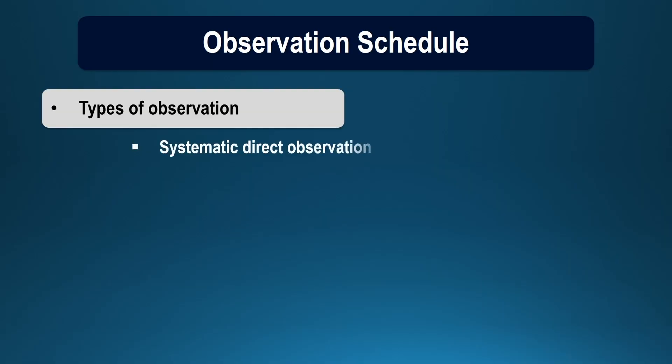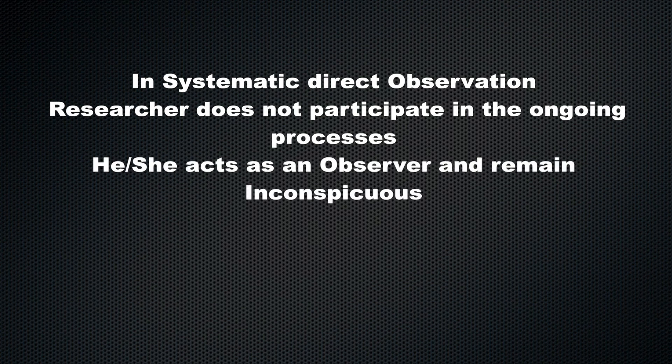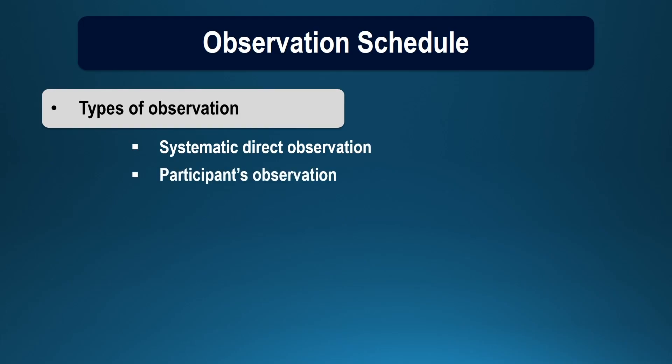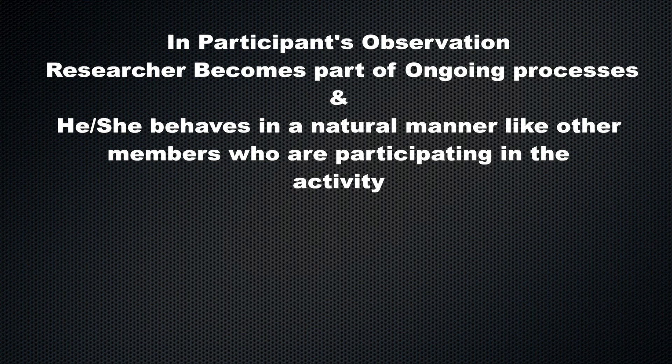One is systematic direct observation, where the researcher does not participate in the ongoing processes or the activities — he or she acts as an observer and remains inconspicuous. There can also be participant observations, where the researcher becomes a part of the ongoing processes and phenomena, and tries to behave in a natural manner like other members participating in the activity, without conveying his identity to the persons involved in the process.